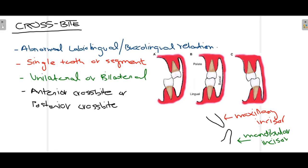Firstly, talking about what basically is crossbite — the definition of crossbite is abnormal labiolingual or buccolingual relation. To understand that, we first need to know the normal relation of the occlusion. In this picture you can see the maxillary molar and the mandibular molar. When you close your mouth in full intercuspation, the maxillary molar is present in front of the mandibular molar — this is your normal occlusion.